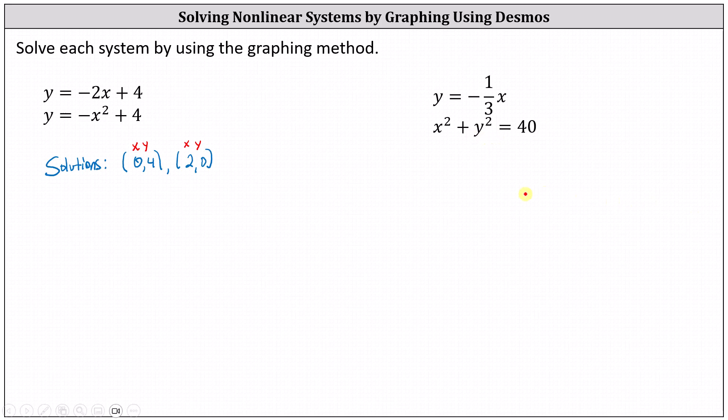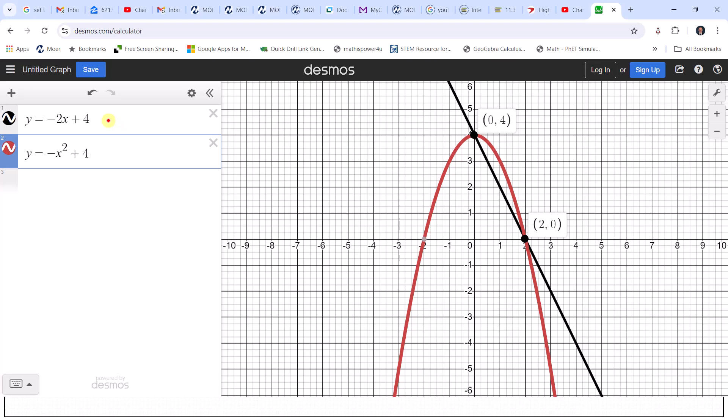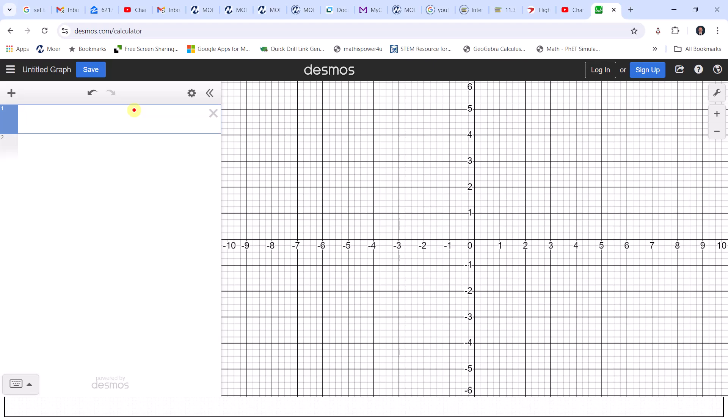Going back to Desmos, to clear the equations we already have, we can click the x on the right and enter the new equations. First, we have y equals negative one third x. Notice my cursor is in the denominator. I need to press the right arrow and then enter x.